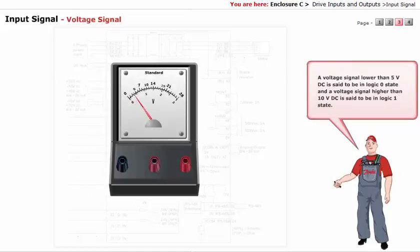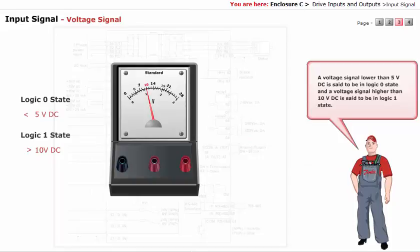A voltage signal lower than 5 volt DC is said to be in logic 0 state. And a voltage signal higher than 10 volt DC is said to be in logic 1 state.